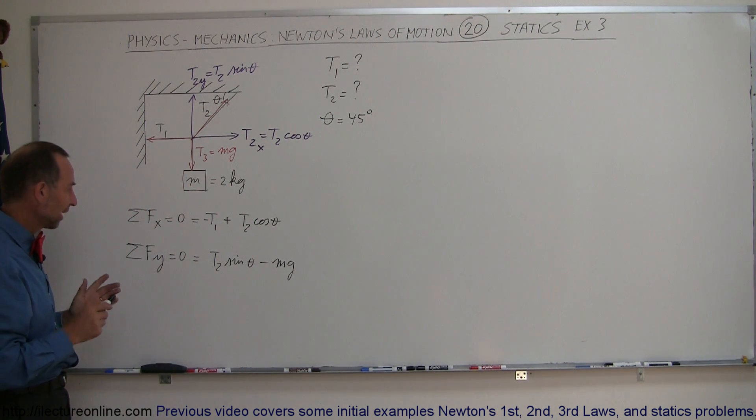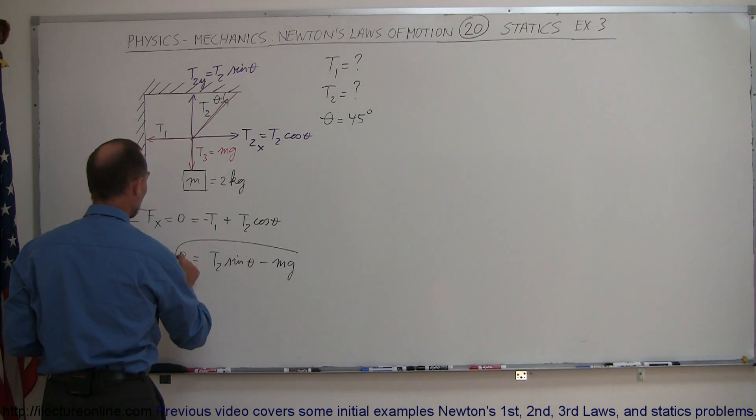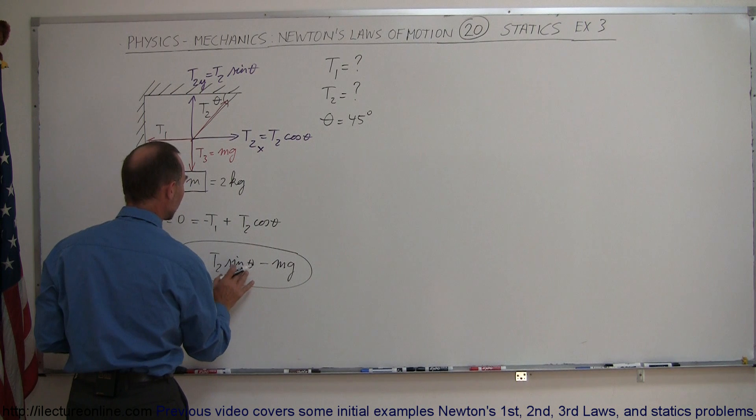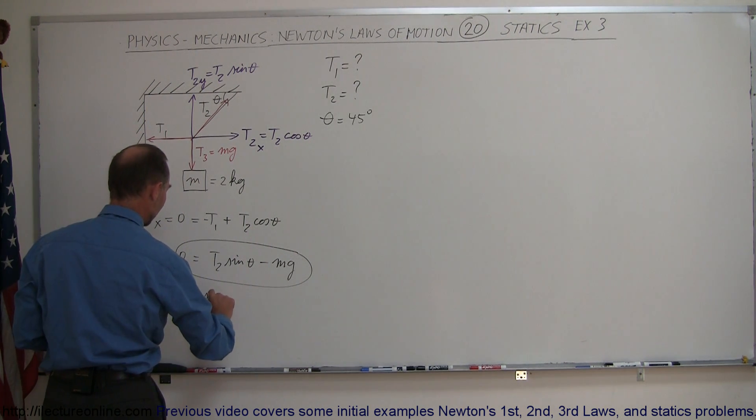So now notice that in this case it's actually a little bit easier. We can look at our second equation and notice that there's only one unknown in there, so we can use this equation to solve for T2.